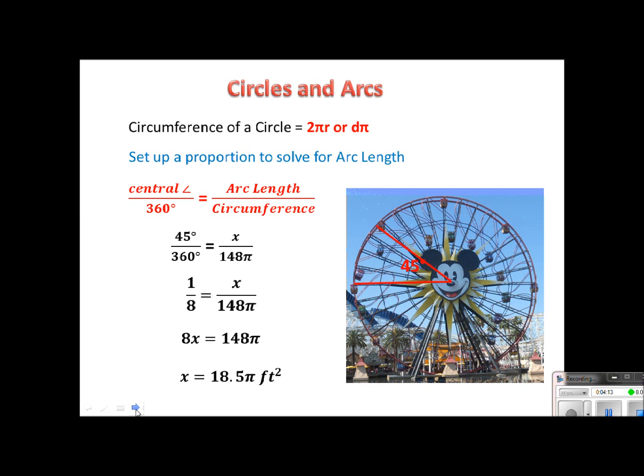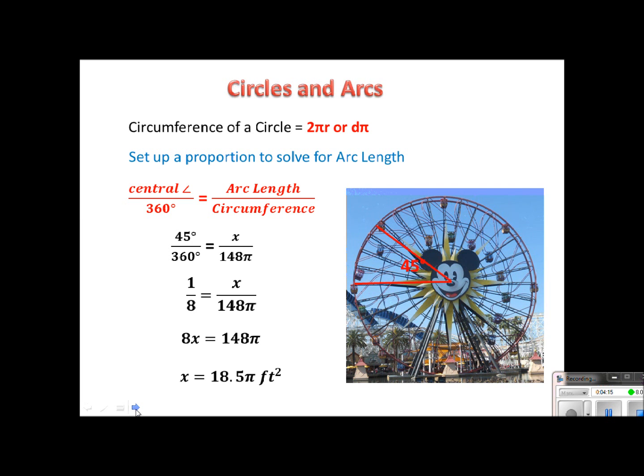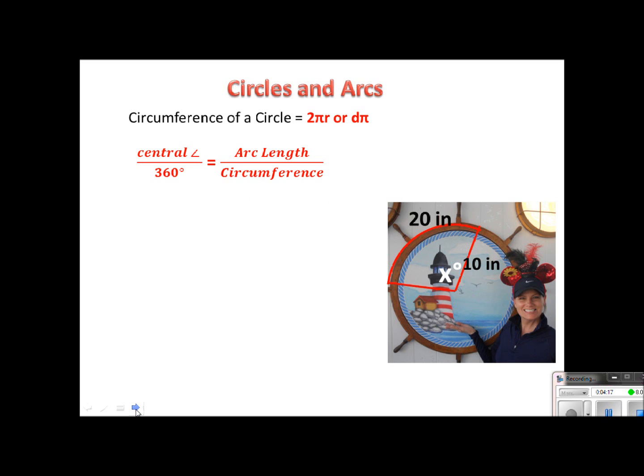Let's do another one, and this time we're going to use the same proportion, except we're going to solve for something that's a little different. So I took this picture on the California side, and it was just this circle on this random wall. So I thought, hey, perfect, let's use this in a problem.